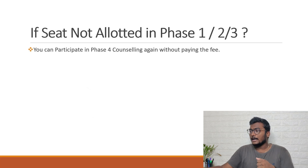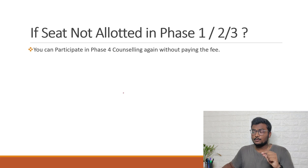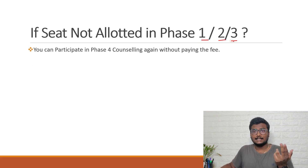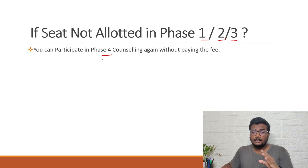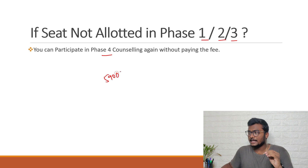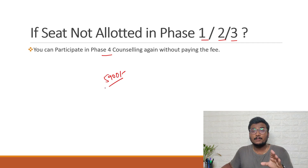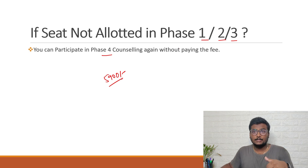If you didn't get any seat in Phase 1, Phase 2, or Phase 3, you can participate in Phase 4 counseling without paying any additional fee. The 5,100 rupees you already paid is enough to participate in the next round. However, if you already got an allotment and want to participate in the next phase, that is not possible.